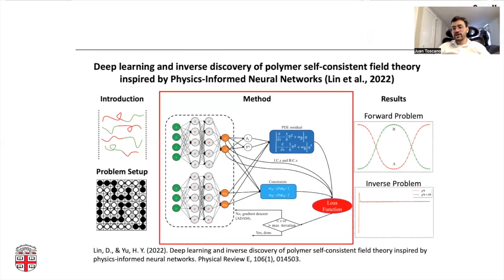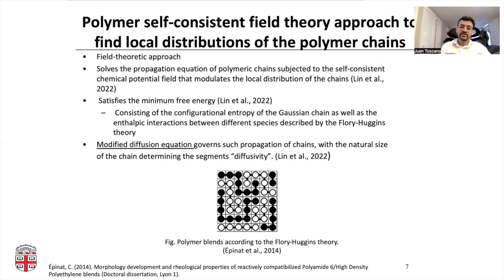Now let's see how the authors deal with this problem. They use this polymer self-consistent field theory to find the local distribution of the polymer chains. The general idea is that the self-consistent chemical potential field modulates the local distribution of the chain. So if you know it, you can use it to define how your chains propagate along your 1D domain. This is a field theoretic approach that satisfies the minimum free energy, which is good because it means that the problem is constrained, but it can become tricky when you have multiple free energy, which is what exactly happens for this case.